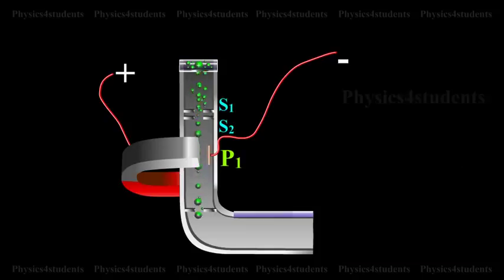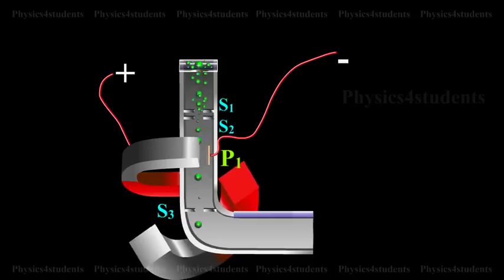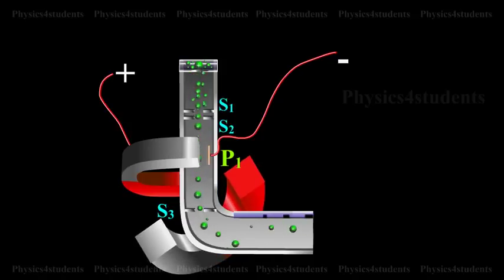Only those ions having this velocity V pass out of the velocity selector and then through the slit S3 to enter the evacuated chamber D. These positive ions having the same velocity are subjected to another strong uniform magnetic field of induction B' at right angles to the plane of the paper acting inwards.